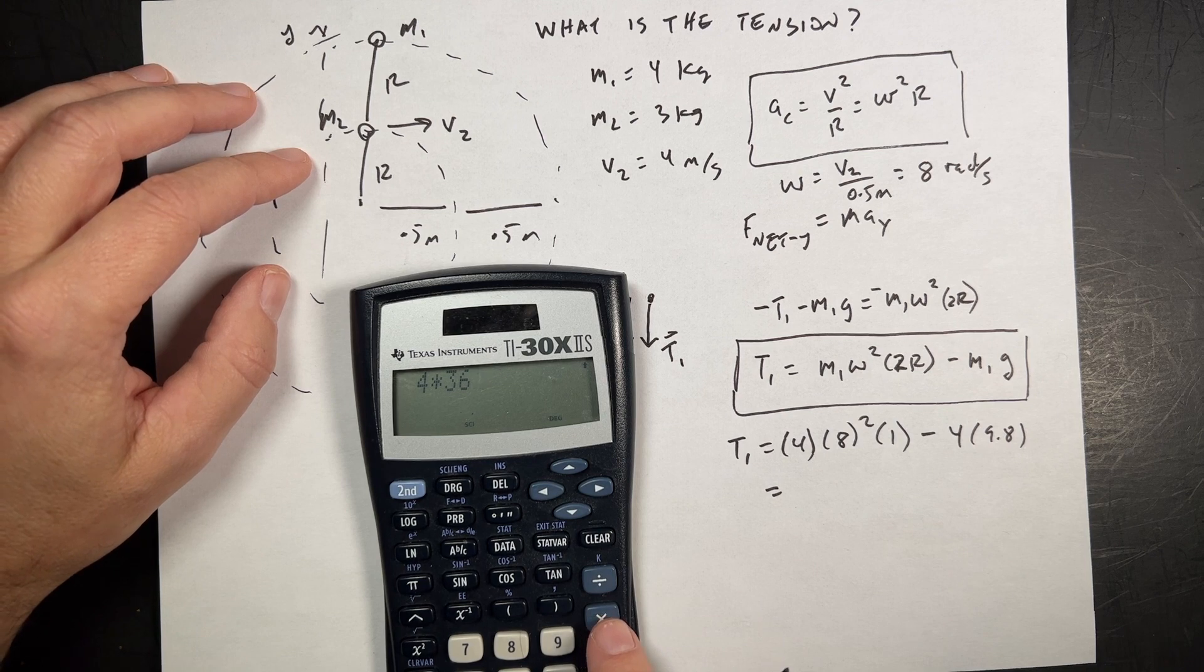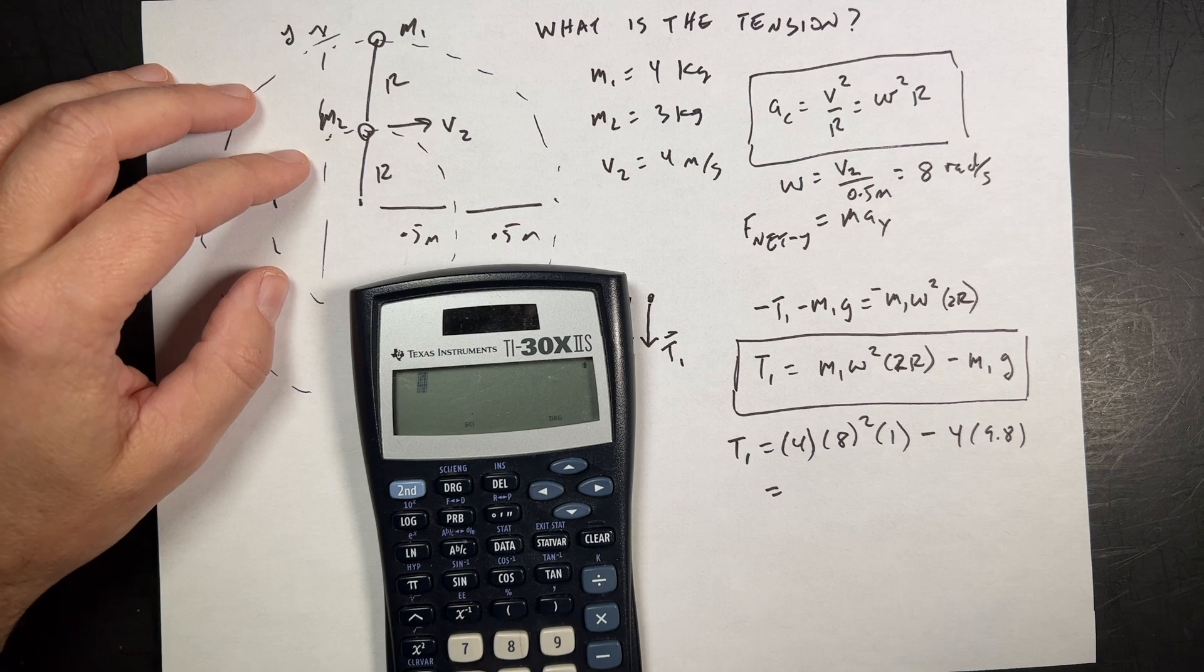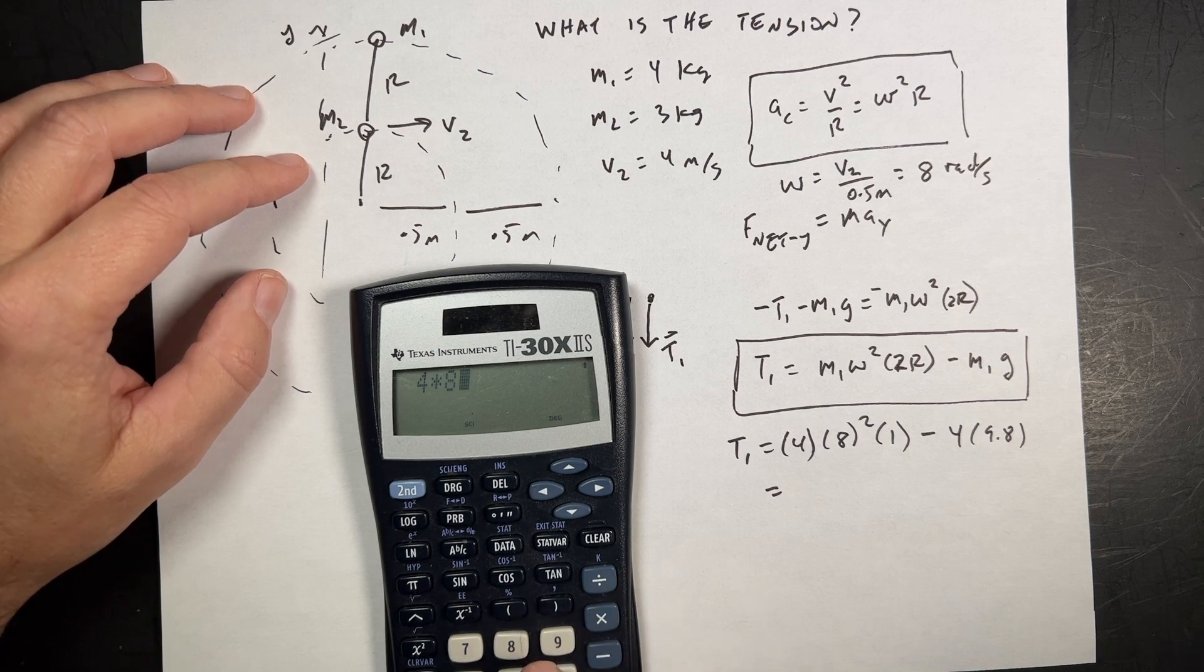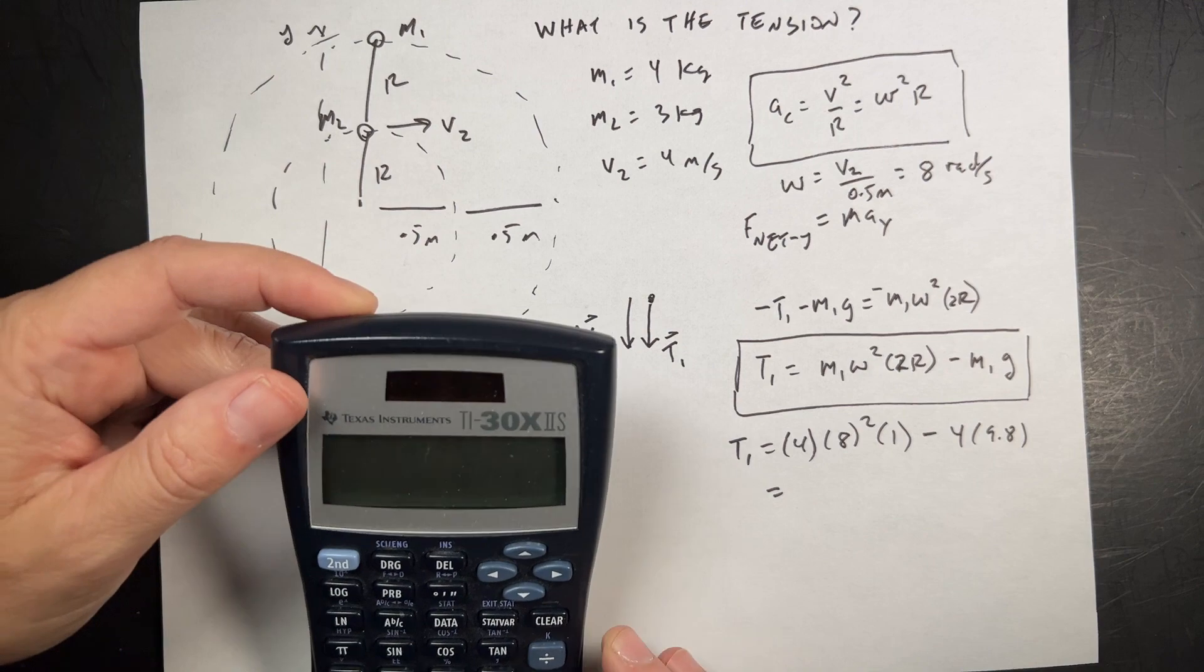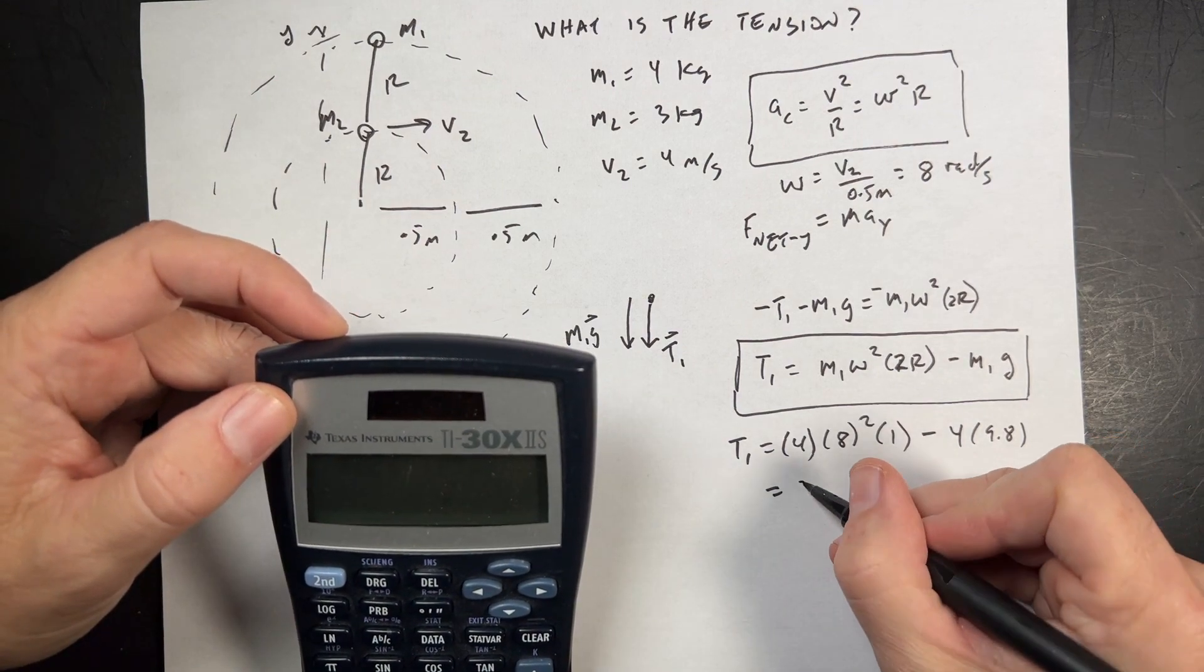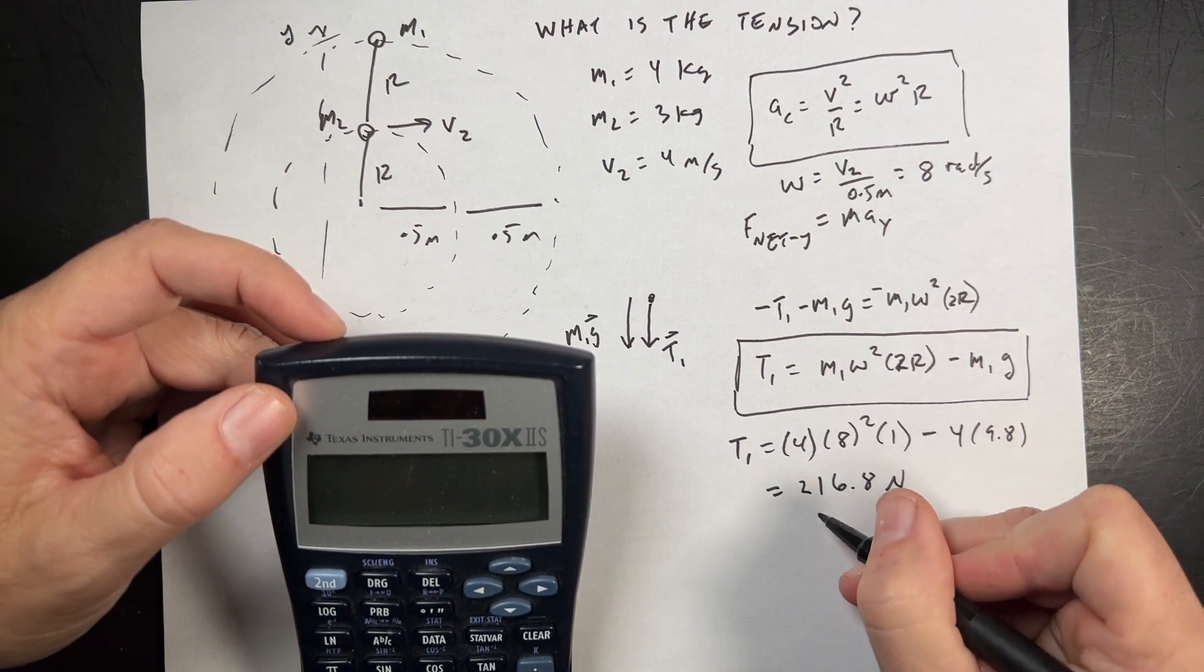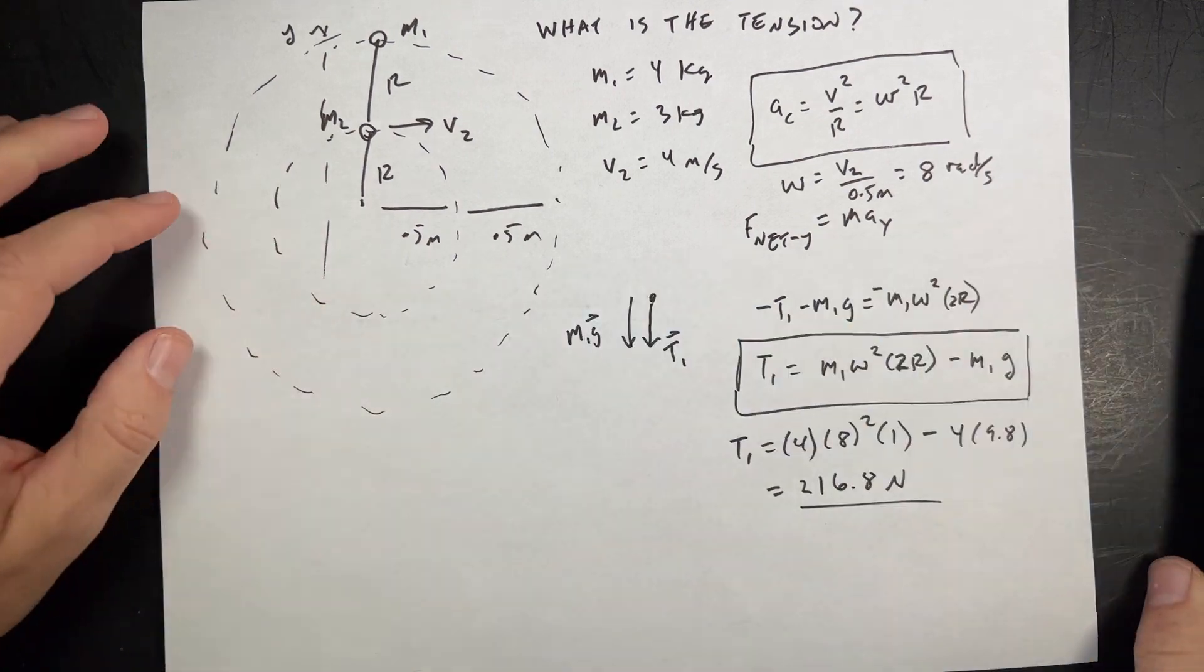4 times 8 squared is 36. Right? 8 times 8. No. 64. Let's just do 4 times 8 squared times 1, minus 4 times 9.8 equals, and I get 216.8 Newtons.